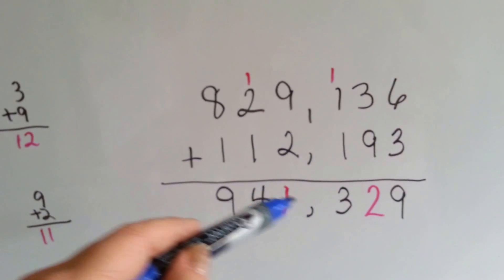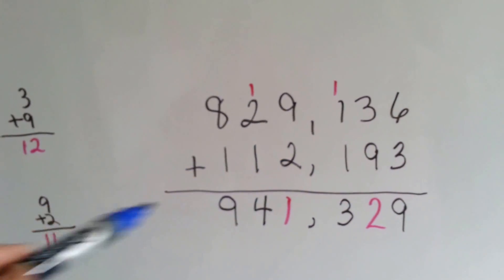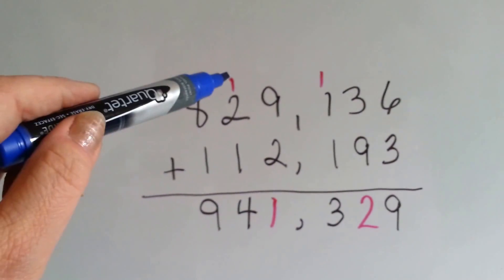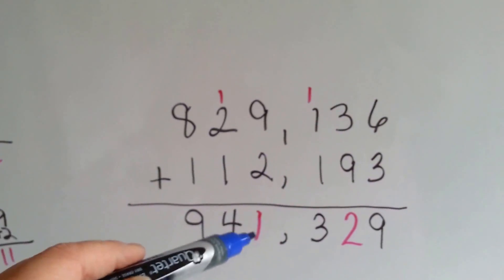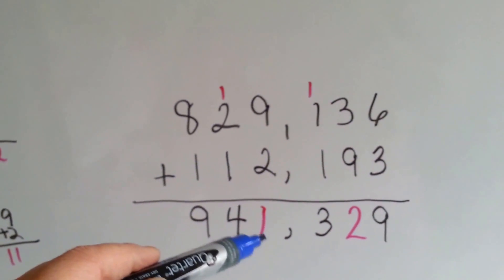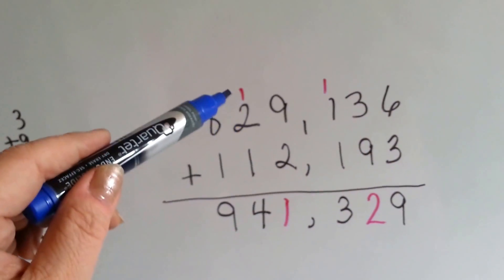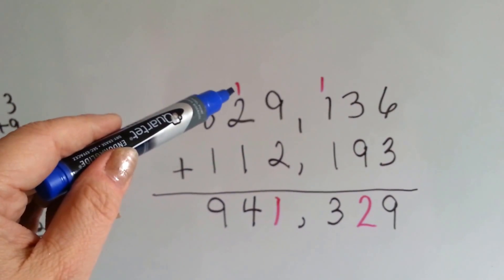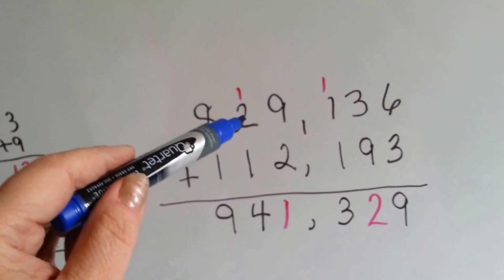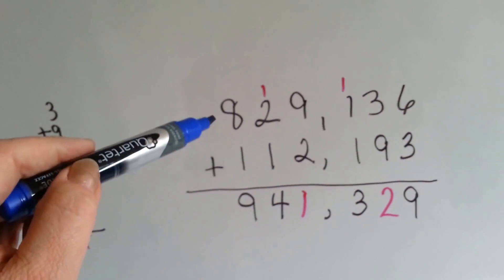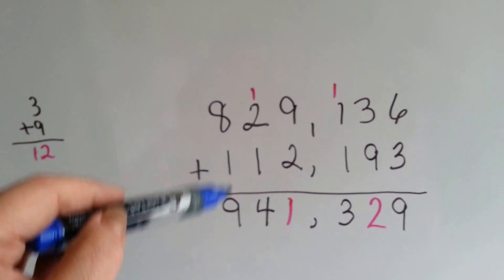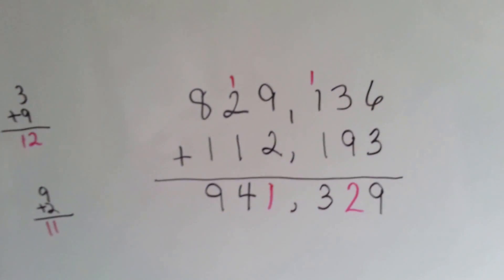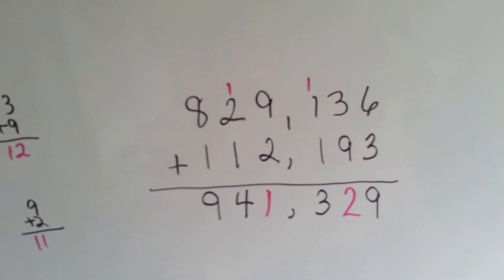We put our comma. 9 plus 2 is 11. We put the 1 up here for the 10 and the 1 down here for the ones place. So the 10 got carried over to the next column — the 10,000th column. 1 plus 2 plus 1 is 4. We put the 4 down, and then 8 plus 1 is 9. And our answer is 941,329.